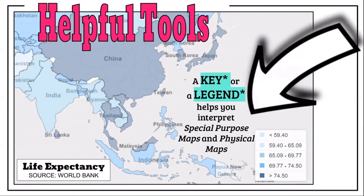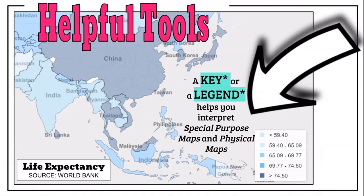Equally important is the key or legend. Without it, I could only make educated guesses about what the color changes mean. The key helps you interpret special purpose maps and physical maps. On a physical map, the key changes based on elevation — so you know this place is 10,000 feet above sea level, this place is right at sea level, or this place is below sea level. From that, you can analyze further.